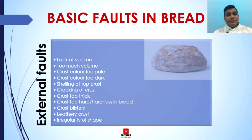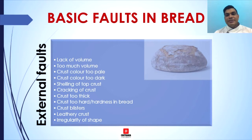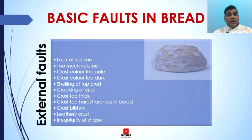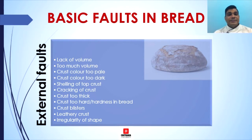External faults are those faults which can be seen from the outside of your bread — such as volume, color, and crust — all coming under external faults visible from the outer shape and size. Lack of volume is a major fault caused by dough that is too tight, too little yeast, or too much salt, which causes under-ripening. Flour with low maltose or overbleached flour and excessive use of chemical improvers will also lead to a lack of volume.